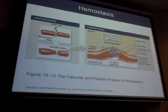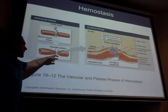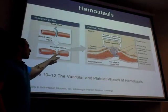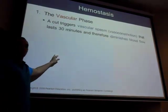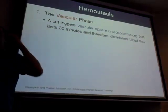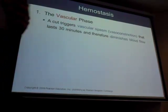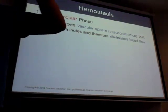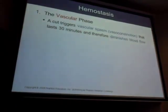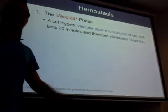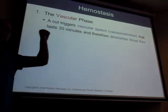Here's a picture with a cut in the blood vessel. Blood vessel injury leads to vascular spasm — vasoconstriction — to reduce blood flow, just like squeezing a pipe to reduce water flow. It's not going to stop everything, but it slows it down significantly. The vascular phase involves vasoconstriction to reduce blood flow.